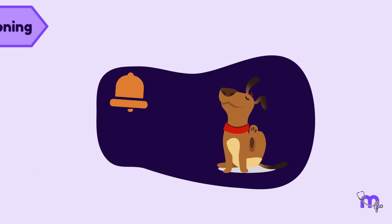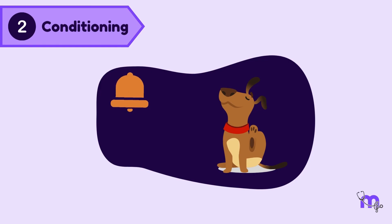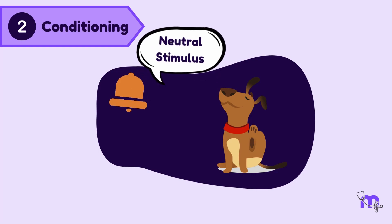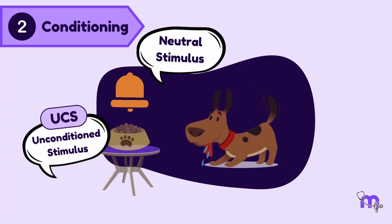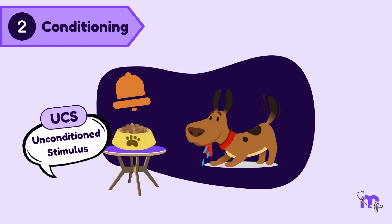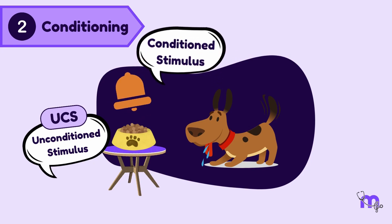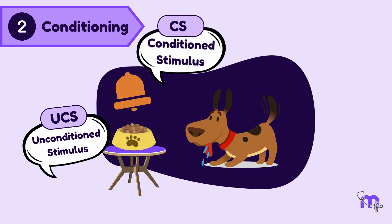The second stage is called conditioning. During this stage, a stimulus that produces no natural response — the neutral stimulus, which in this case is ringing a bell — is associated with the unconditioned stimulus, which is food. That is, the bell is rung each time the food is given, and now this is known as the conditioned stimulus, CS. In this step, we are conditioning the ring of a bell to the food being given. This association is strengthened as the neutral stimulus is repeated.